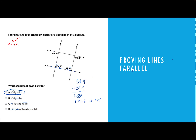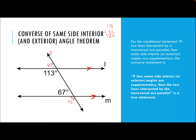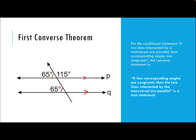In this video, we covered the five converse theorems for parallel lines. The converse theorem for alternate interior and alternate exterior angles states that if two alternate interior or alternate exterior angles are congruent, the lines cut by the transversal are parallel. The converse of the same side interior or exterior angle theorem states that if two same side interior or exterior angles are supplementary, the lines are parallel. And the converse of the corresponding angles theorem states that if two corresponding angles are congruent, the two lines intersected by the transversal are also parallel. Thanks for watching.